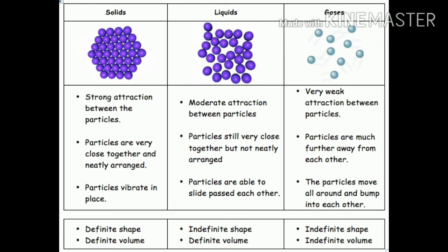Now we will talk about the characteristics of solid, liquid and gas. Solid ke jo molecules hote hain wo bahut tightly packed hote hain. Liquid mein thoda sa space hota hai. Aur gases ke jo molecules hain wo bahut door-door hote hain. In solid, the molecules are tightly packed. In liquid, there is very little gap. And in gas, there is a lot of gap between the molecules.